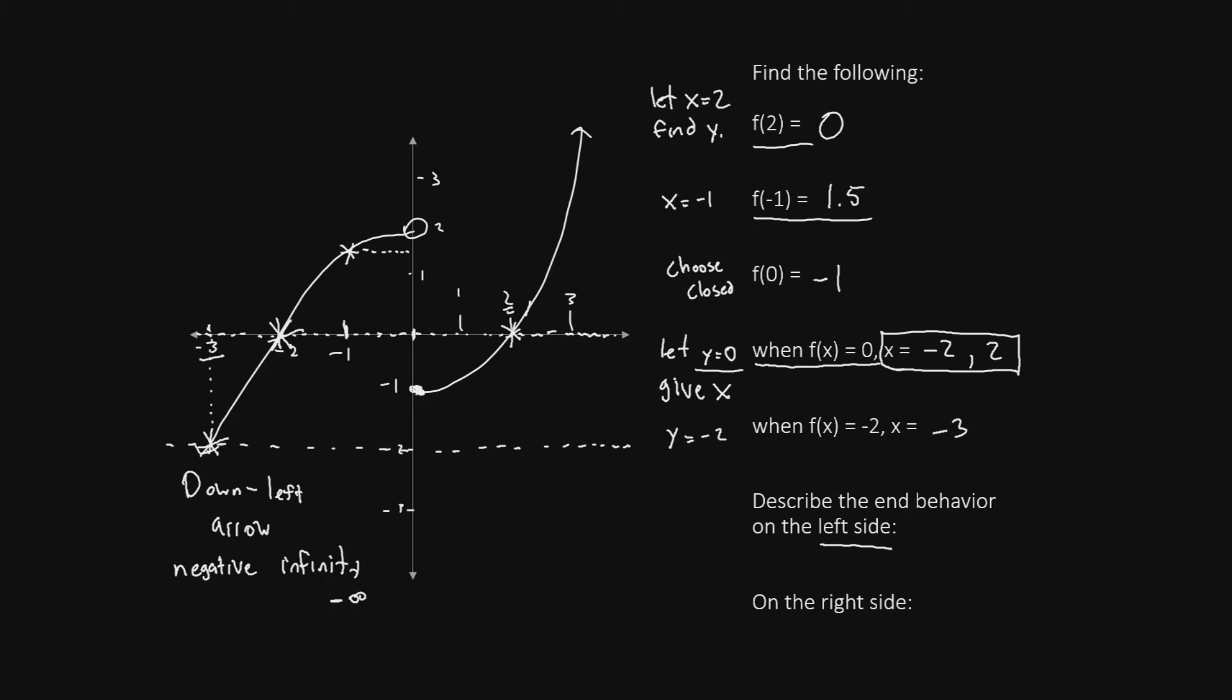Now there's a certain way that they'll want you to write this in Math 171. To describe the end behavior to the left, we say x goes to negative infinity. This is just a symbolic way of saying to the left. So as x goes to negative infinity, y goes down and continues down toward negative infinity. So we'll say y goes to negative infinity.